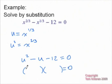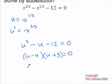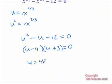And we'll end up with u minus 4 and u plus 3. So if we solve this, we're going to find that u equals 4 and u equals negative 3.